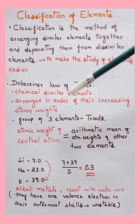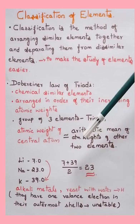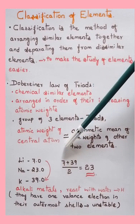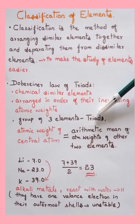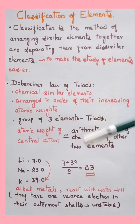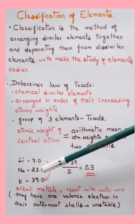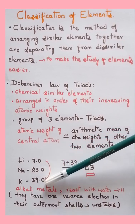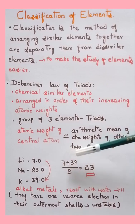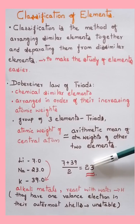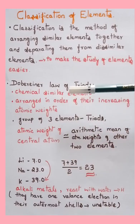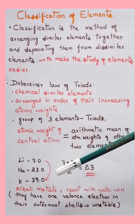Dobereiner arranged elements in increasing order of atomic weight and chose groups of three elements called triads. According to Dobereiner's Law of Triads, in a triad of elements having similar properties, the atomic weight of the central atom was approximately equal to the arithmetic mean of the atomic weights of the other two elements. For example, lithium (atomic weight 7), sodium (23), and potassium (39): the mean of 7 and 39 is 23, which equals sodium's atomic weight.